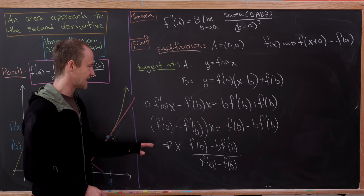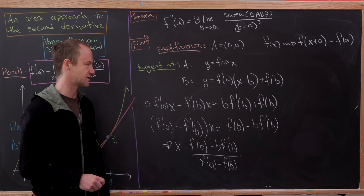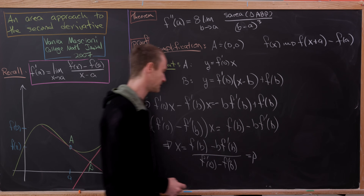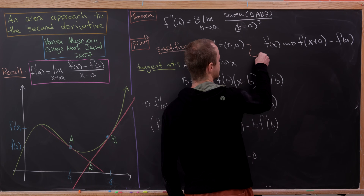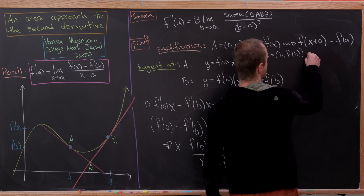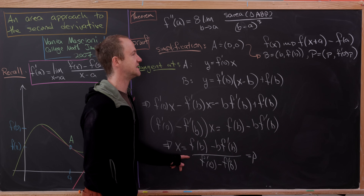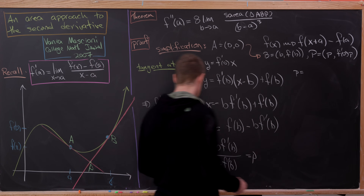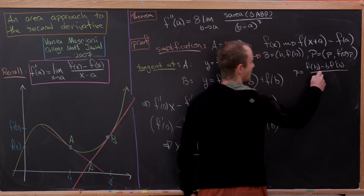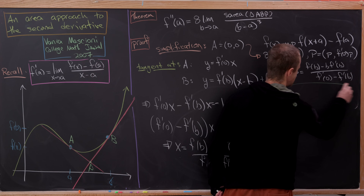If that's our x-coordinate, the y-coordinate is simply f'(0) multiplied into this x-coordinate. We'll call this x-coordinate little p and the y-coordinate little q, just for notation. So we have A as the origin, B equals the point (b, f(b)), and P equals the point (p, f'(0) times p), where p equals f(b) minus b times f'(b), all over f'(0) minus f'(b).